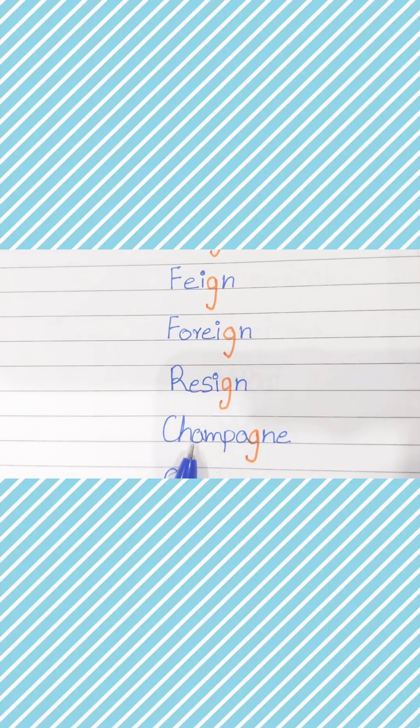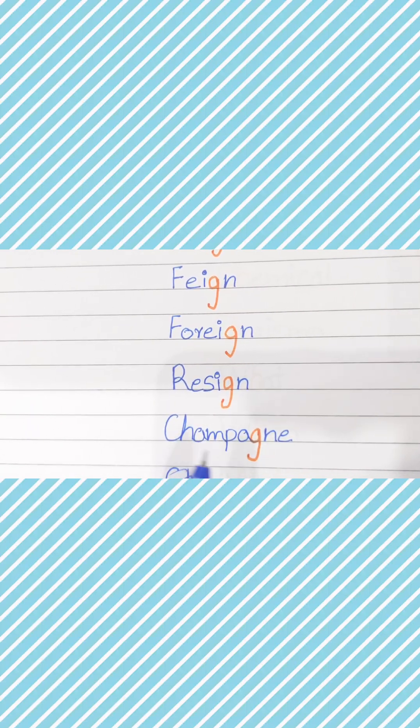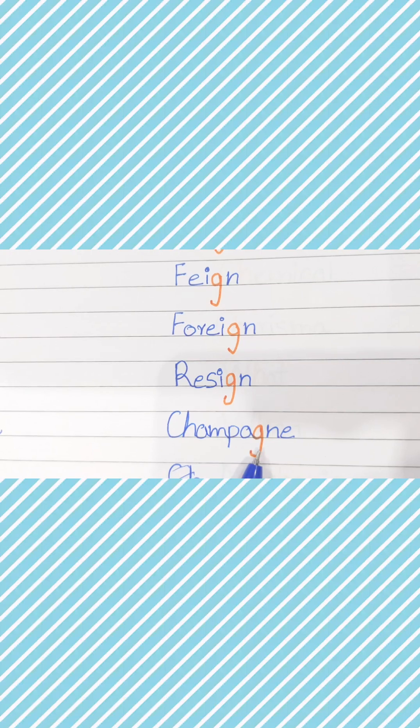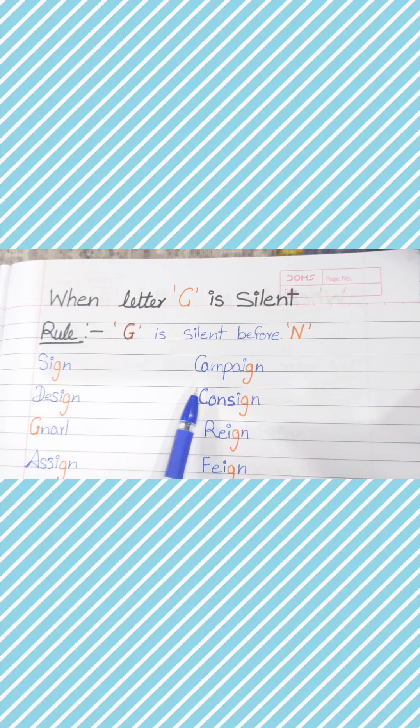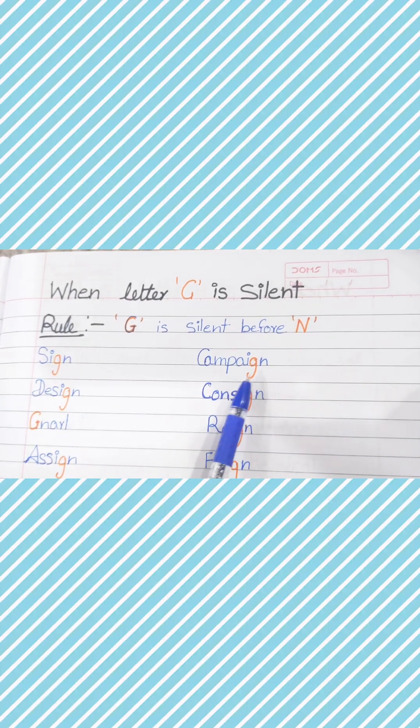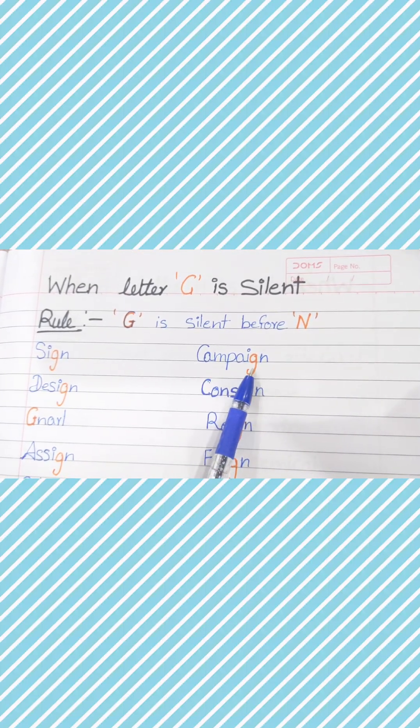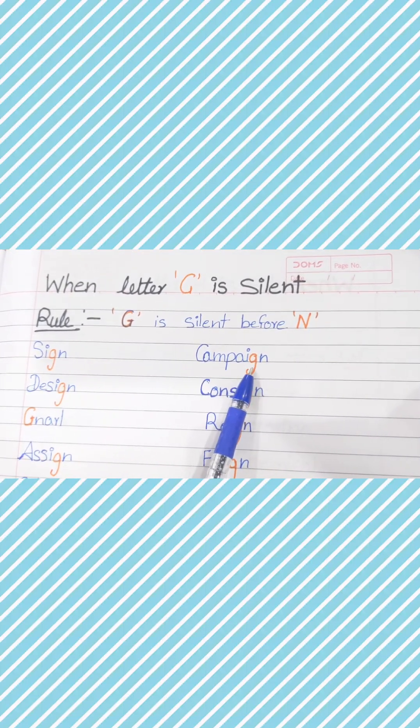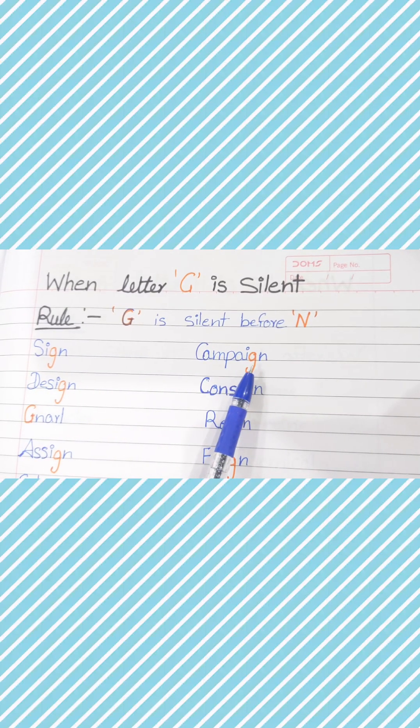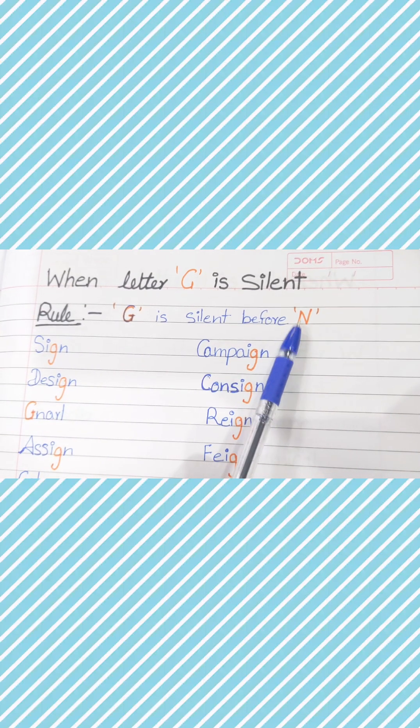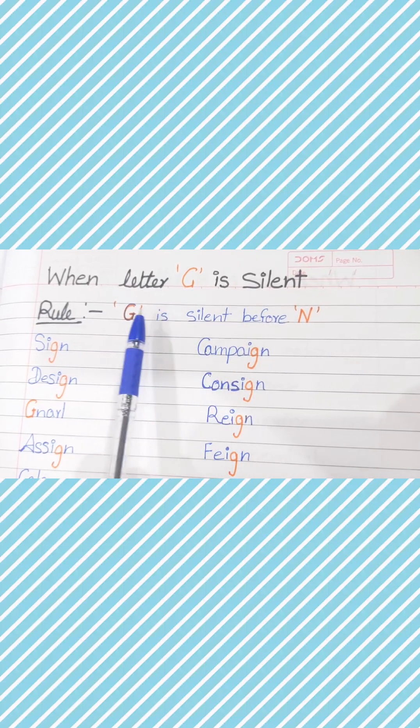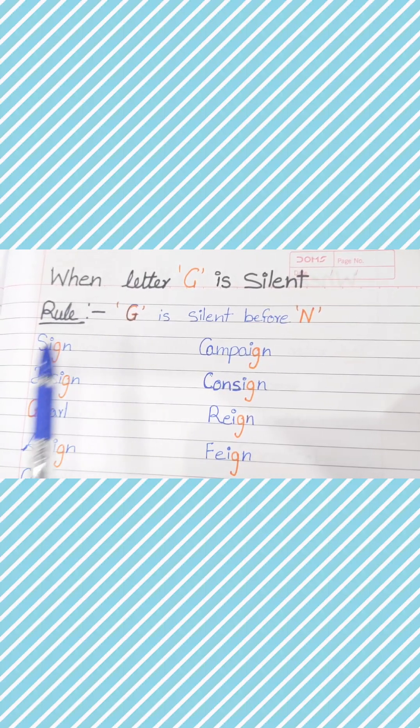Next, what is the last? Champagne - G is silent. If we don't write these words where G is silent, then it will be wrong. But we should know where G is silent and how do we pronounce it. So when N comes after G, then G becomes silent.